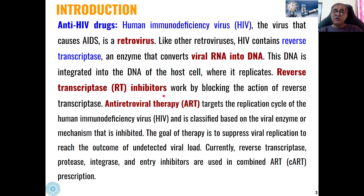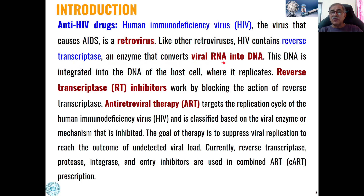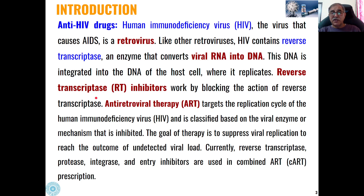Replication of DNA will start happening and this is how the viruses will replicate. Anti-HIV drugs are those drugs which will inhibit this reverse transcriptase enzyme, which is why they are called reverse transcriptase inhibitors. These types of anti-HIV drugs work by blocking the action of this reverse transcriptase enzyme — that is, it will stop the conversion of viral RNA into viral DNA, and hence the replication of the virus will be inhibited.